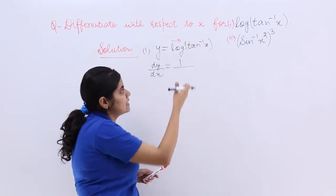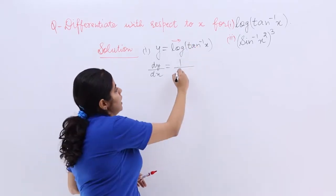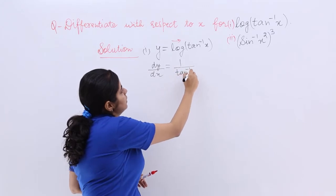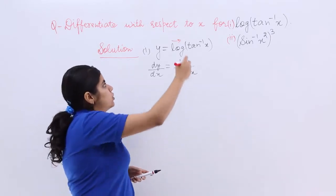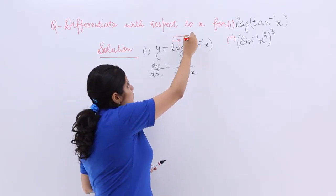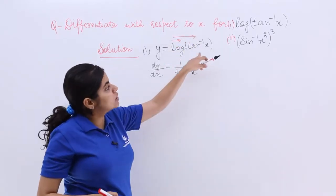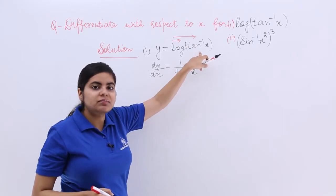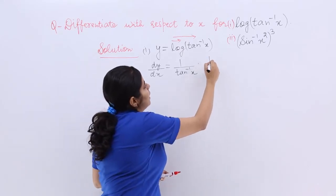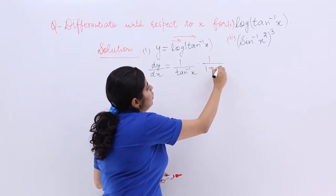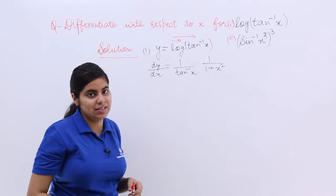So it is 1 upon x. x is tan inverse x here in this problem. But 1 upon x is not the only answer because according to chain rule, when you move forward, you saw there was also tan inverse x. Now what is the differentiation of tan inverse x with respect to x? You know the formula. If you have learnt in the previous videos, it is 1 upon 1 plus x square.